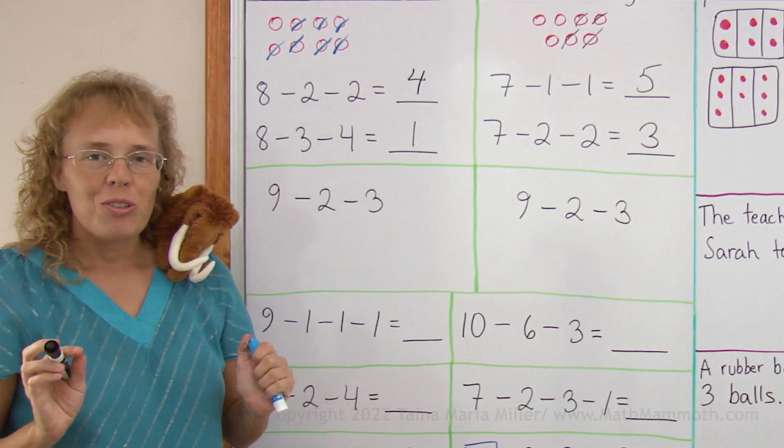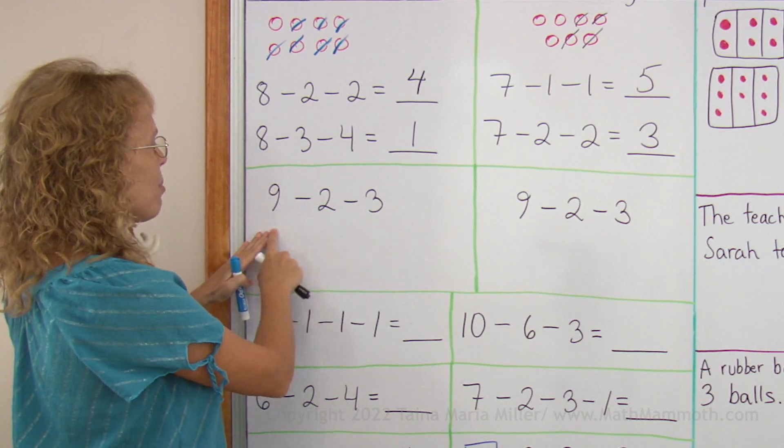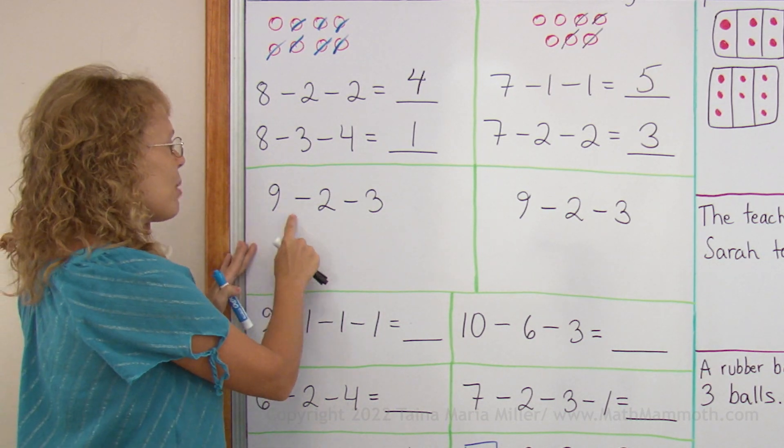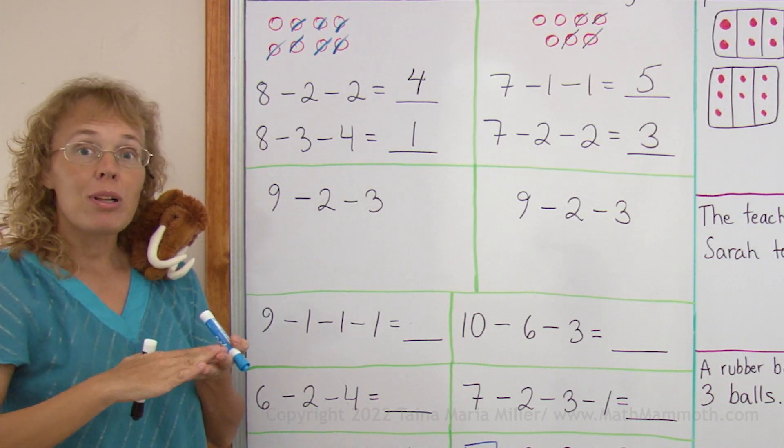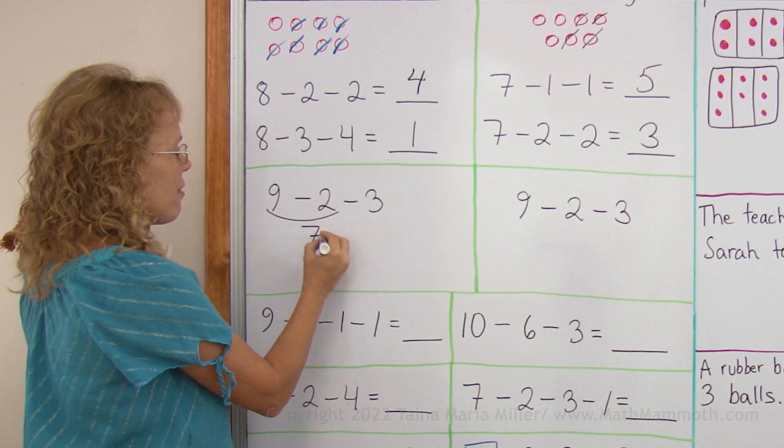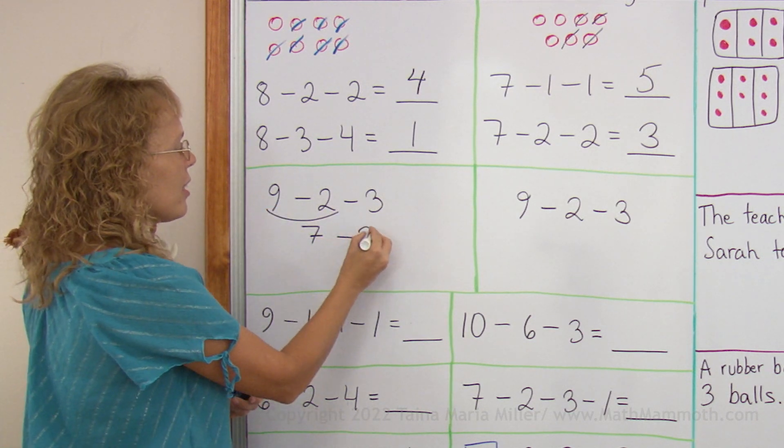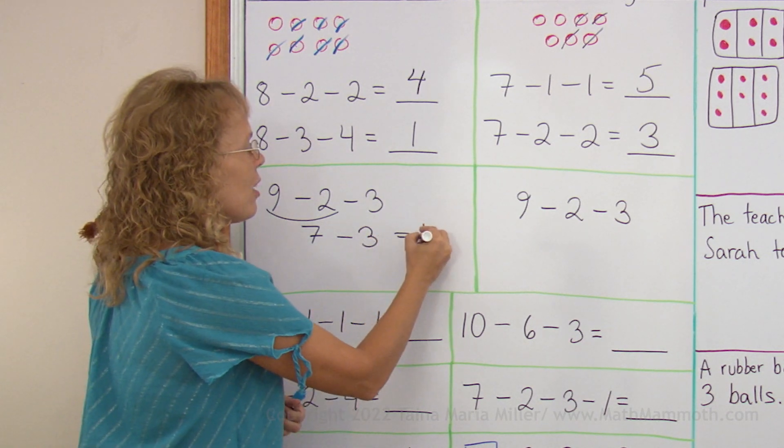Let me show you those two ways of thinking again. One way to think about it is that I first think 9 minus 2. I have 9 something and 2 go away. So I will have 7 left. 9 minus 2, that would be 7. And then from 7 I take away 3. 7 minus 3 equals 4.